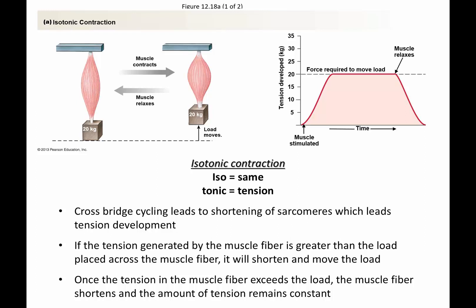Now let's look at an isotonic contraction — the kind of contraction we did during the lab where the length can change as the contraction proceeds. We take the same muscle and attach it to a lighter load. When we activate the muscle, it can generate more than 20 kilograms so it can move the load. What we find is that the tension doesn't go to 25 kilograms, which was its maximum value; it goes to just above 20 kilograms and then moves the load by generating just enough tension to move it as fast as it can for that particular load. You can also calculate a relationship between the mass that needs to be lifted and the speed at which that mass can be moved.